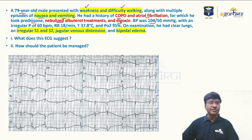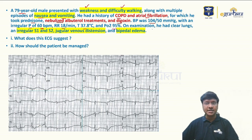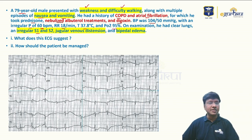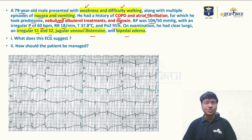His blood pressure is 104/50 mmHg with an irregular pulse rate of 60 beats per minute, indicating bradycardia with an irregular pulse. Respiratory rate is 18, temperature 37.8°C, and oxygen saturation is maintained. On examination, he has clear lungs, irregular S1 and S2, jugular venous distension, and bipedal edema.